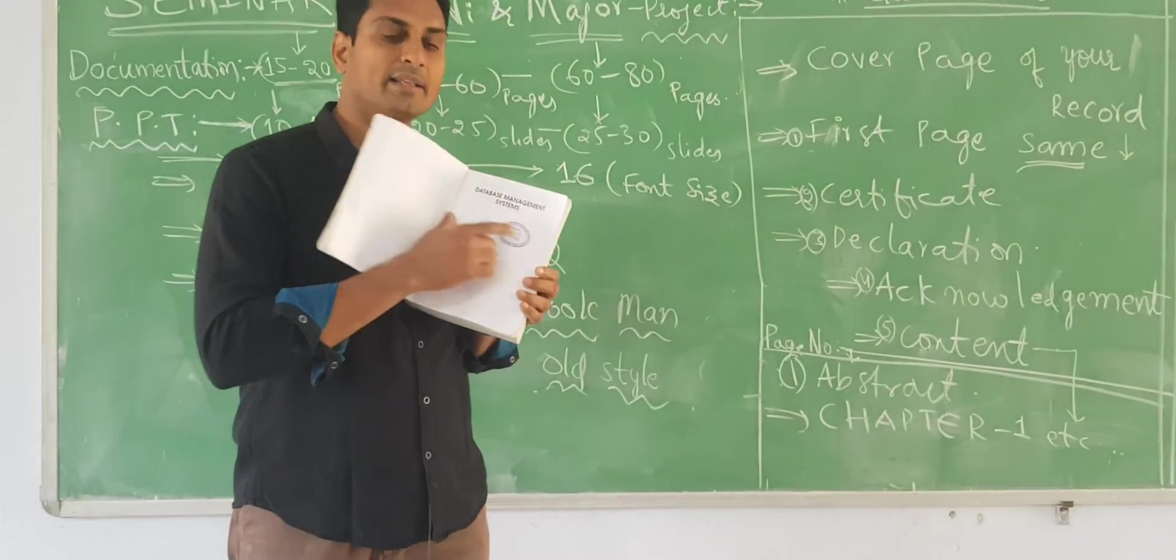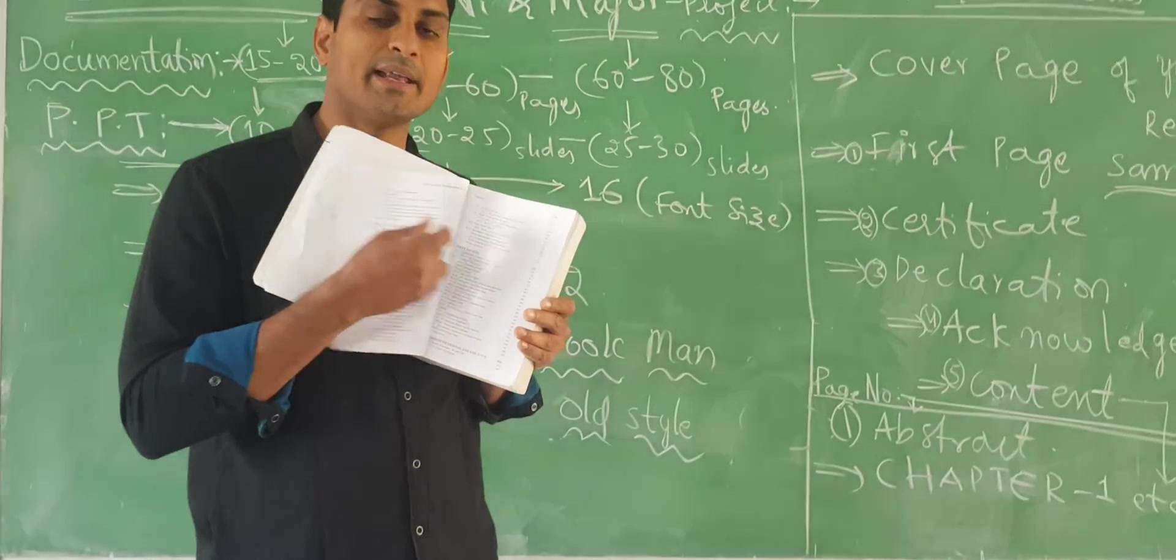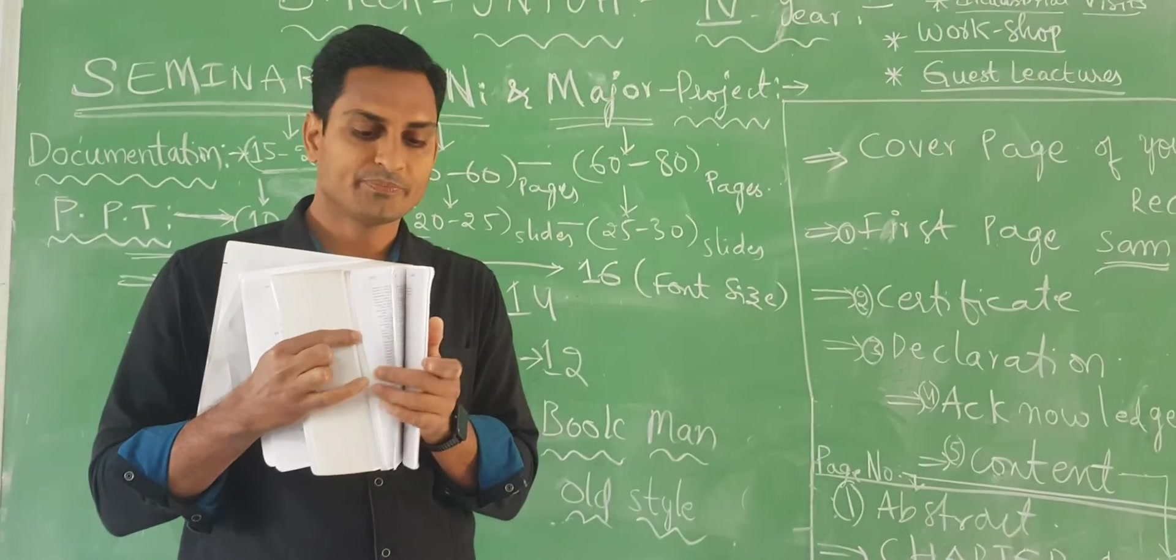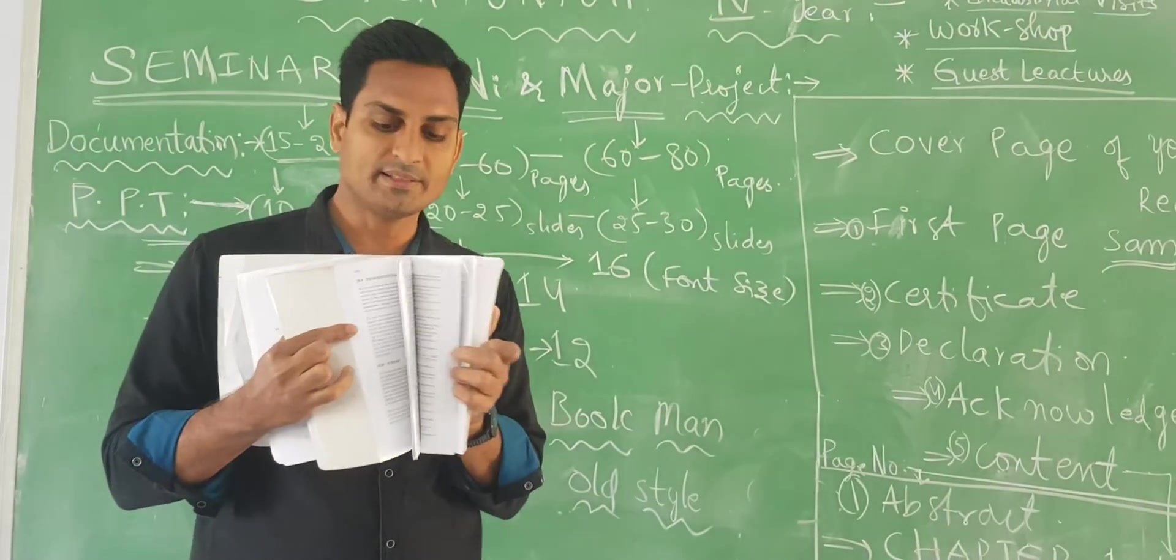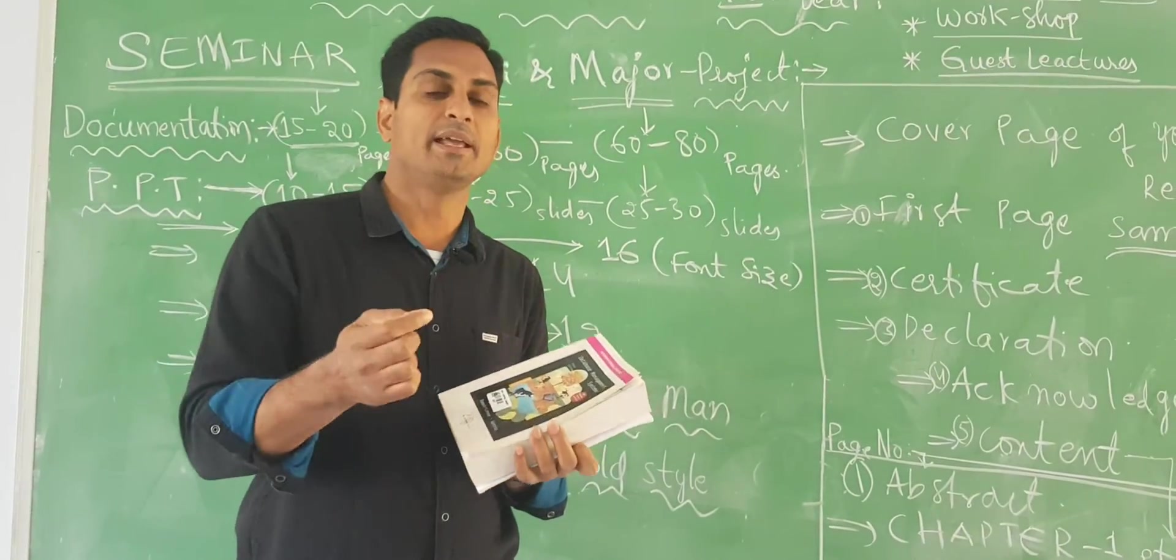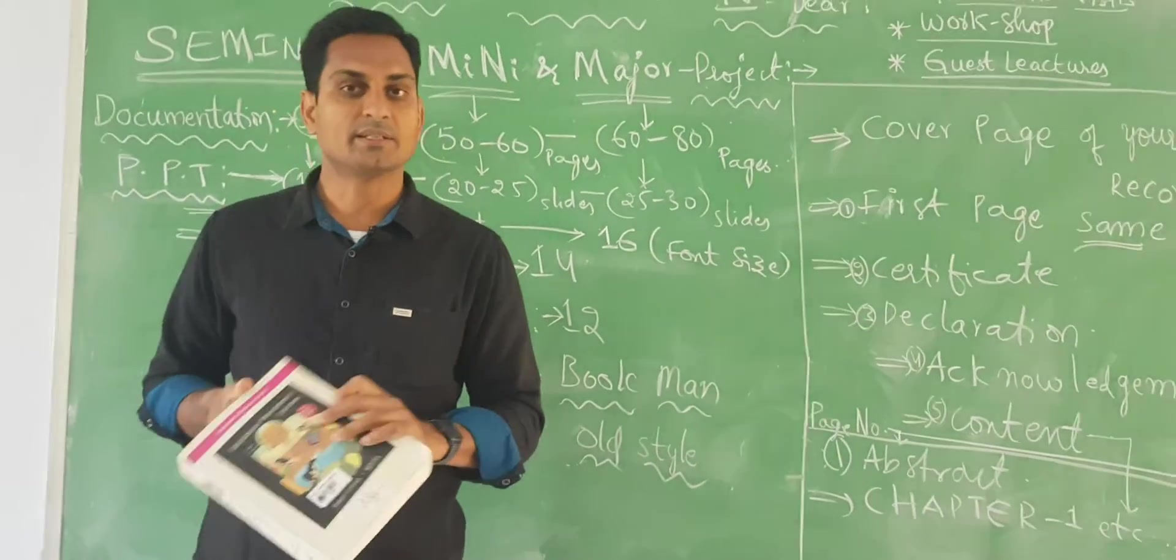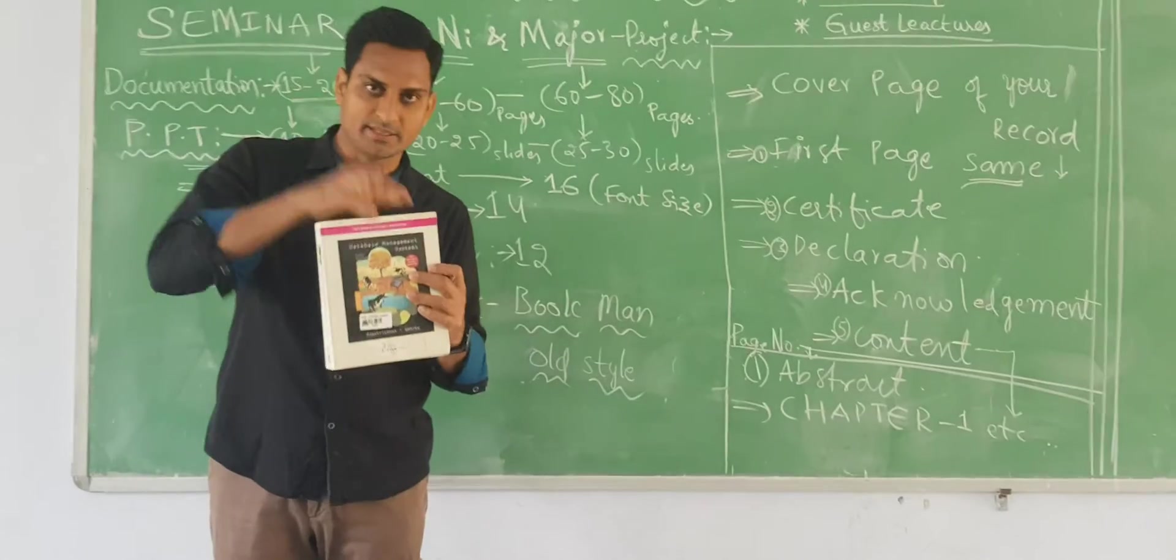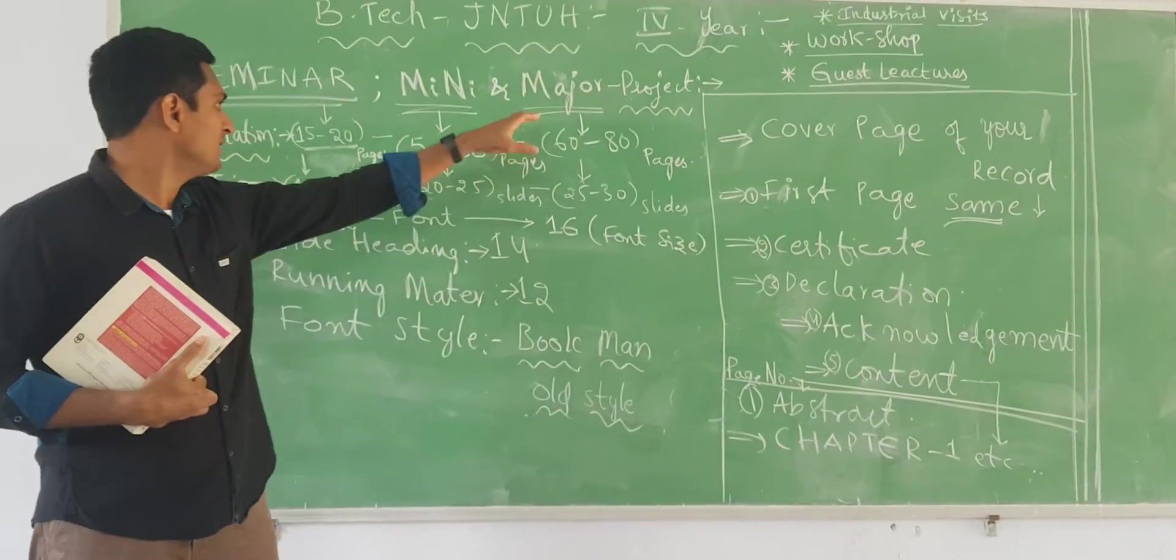First page and same thing will be here. The content, the remaining things. Here will be content and matter. Last you have index and references, bibliography and what are the extensions, just like PhD, paper publication. Just like a textbook. How textbook is designed? Similarly, you need to design major project.